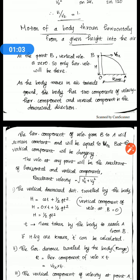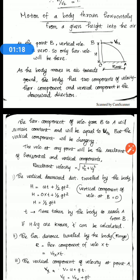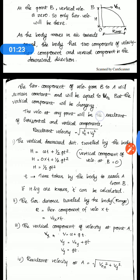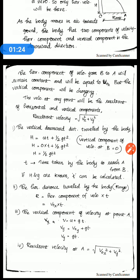The vertical component of the velocity has uniform acceleration, and it moves in the downward direction. The resultant of the velocity is equal to the square root of Vx² plus Vy².